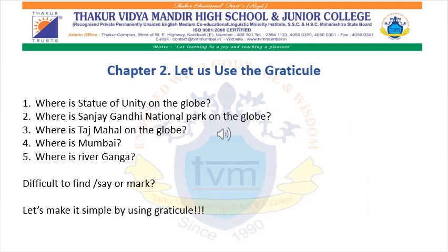Let's begin with Chapter 2. Can you locate the following places accurately on the globe? Statue of Unity, Sanjay Gandhi National Park, Taj Mahal, Mumbai, and River Ganga. It is very difficult to find or mark these, right? Let's make it easier and simple by using the graticule.